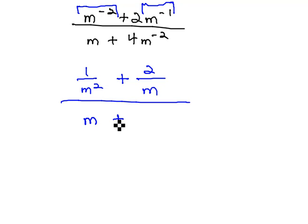In the big denominator, we have m plus 4m to the negative 2. Again, the negative exponent is only on the m, so the 4 stays on top and the m squared moves down, and now we have positive exponents.